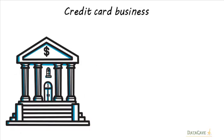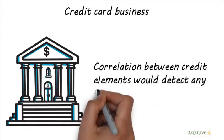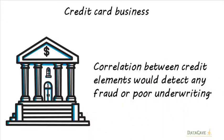Banks also have anomalies in the credit card business, and a strong correlation between credit elements would detect any fraud or poor underwriting. At DataCave,